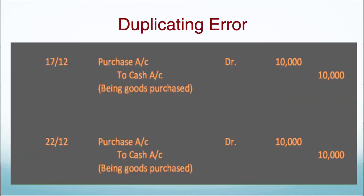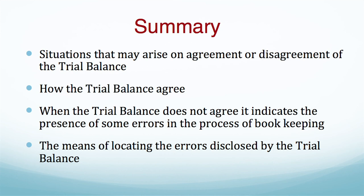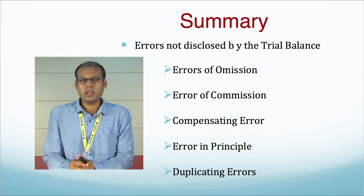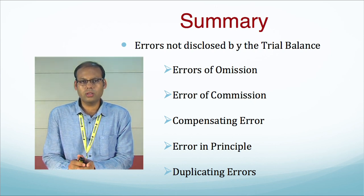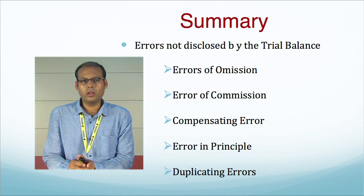So let us see the summary of this video. We discussed the situations that may arise on agreement or disagreement of trial balance, how the trial balance is agreed, the mechanism through which the trial balance automatically agrees or disagrees, and that when the trial balance does not agree it indicates the presence of errors in bookkeeping. We also discussed the means of locating errors disclosed by trial balance, as well as the errors not disclosed: error of commission, error of omission, compensating error, error in principle, and duplicating errors.